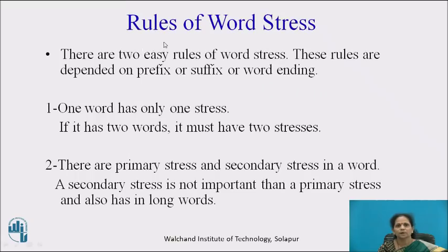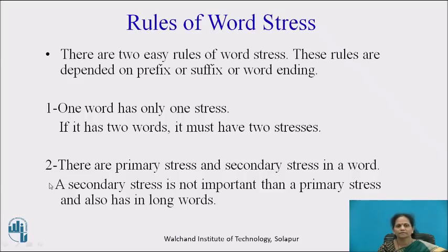Now let us discuss the rules of word stress. There are two easy rules. First, one word has only one stress; if it has two words, it must have two stresses. Second, there are primary stress and secondary stress in a word. A secondary stress is less important than a primary stress and occurs in longer words.